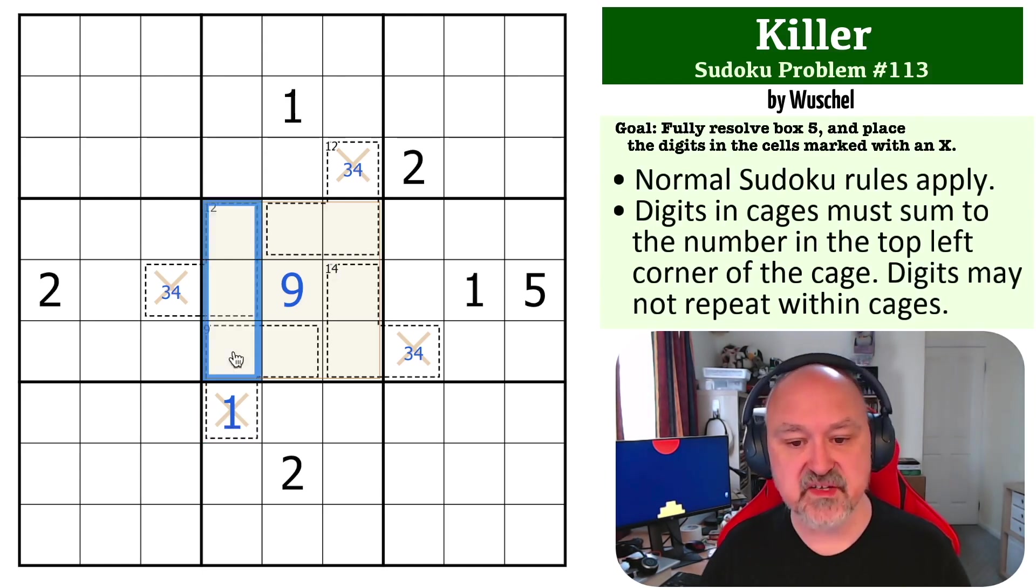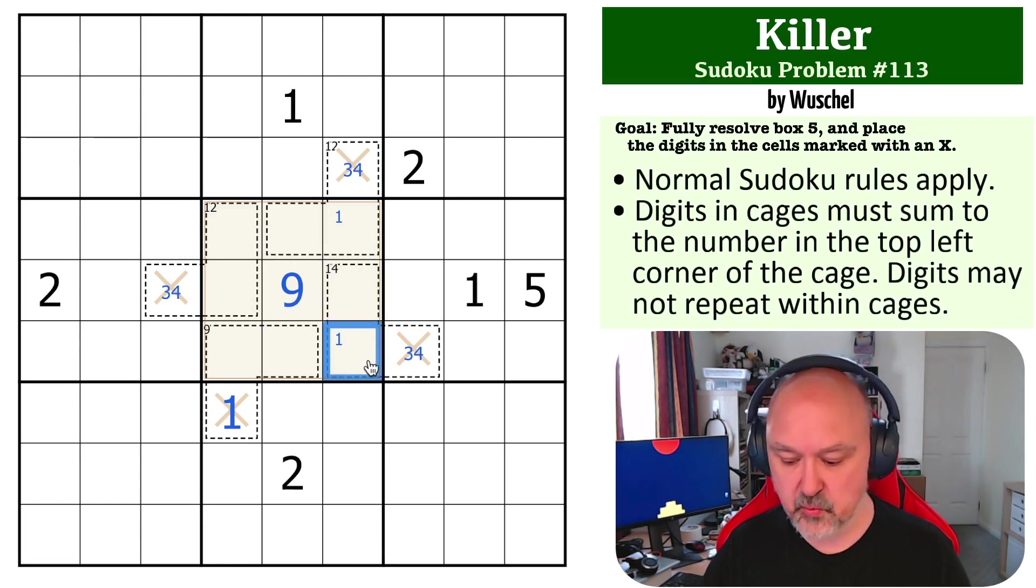Now the next trick is, where does 1 go in this central box? Because it can't go here or here or here, so it's in one of those two. Now a 1 here is going to cause a problem because 1 and 3 means this would have to be a 10. That's not going to work. 1 and 4 would mean this has to be a 9, and that's not going to work either. So this isn't the 1. This is the 1.